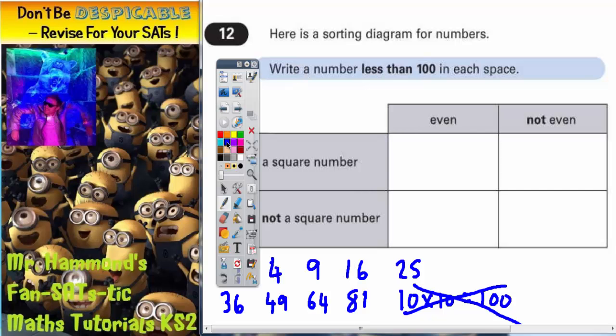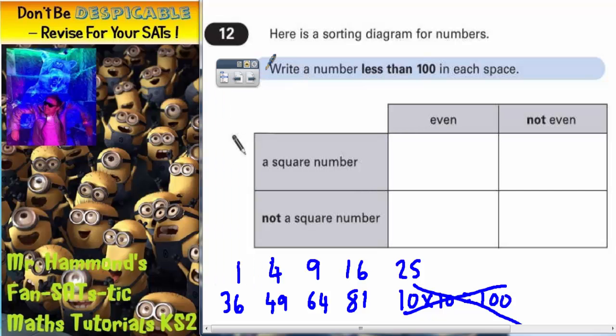So we're only interested in these square numbers because these are the ones less than 100. So let's see if we can use these to help us fill in the table. So this first box, if we read all the way up to even and all the way across to square number, we're looking for an even square number.